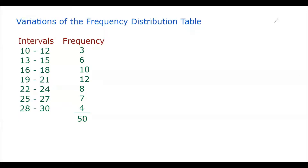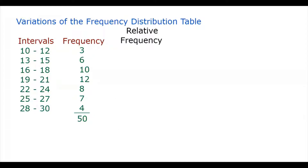Hello, everyone. Today we're going to construct the variations of the frequency distribution table. The first variation is the relative frequency, which is the ratio between the frequency of the class interval over the total number of observations. For the first class interval,